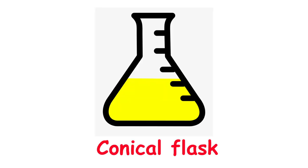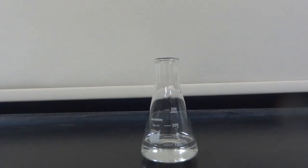A conical flask is a container with a narrow neck, which allows mixing by swirling without splashing out.